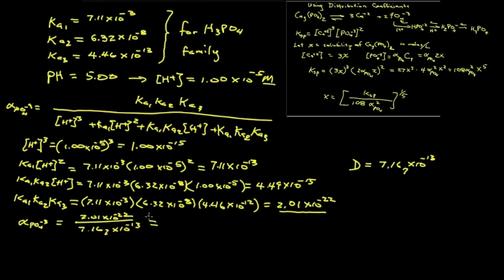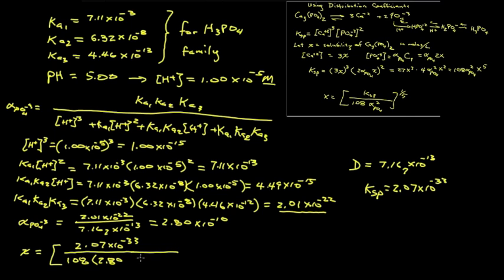Or 2.8 times 10 to the minus 10th. And solubility is a function of KSP. And KSP, I find in the table, it is 2.07 times 10 to the minus 33. It's a real rock. So we divide that by 108 times the alpha squared, 2.80 times 10 to the minus 10 squared.